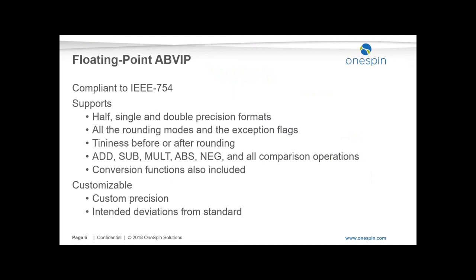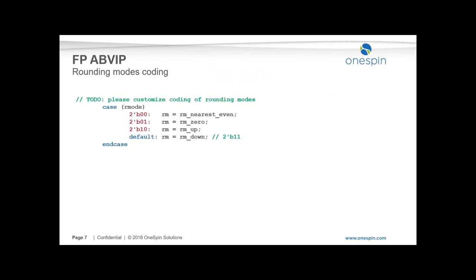The IP is highly customizable — the user can select between half, single, and double precision, and it is also intended to accommodate deviations from the standard in case the customer adds functionality. When the user instantiates the formal verification IP, they get hints on where to customize — for example, defining the coding of rounding modes using a case statement in the template, specifying that rounding mode coded with zero-zero is nearest-even, then zero-up or zero-down, and so on.